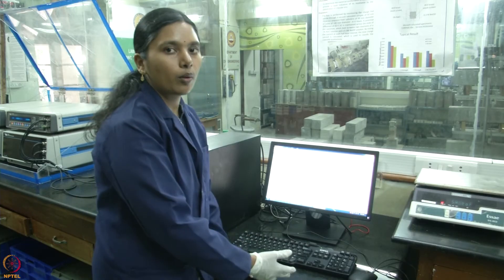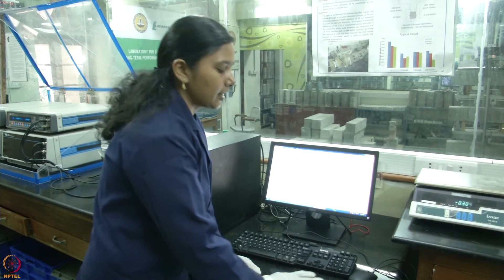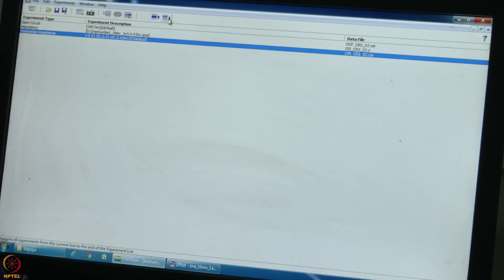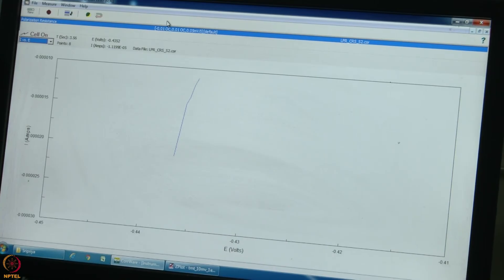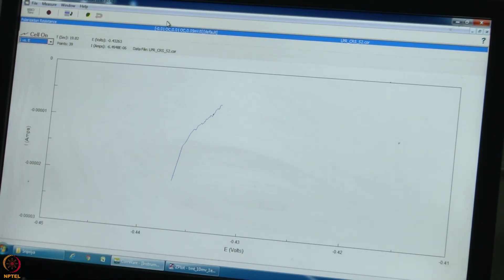Second, I will show you now the linear polarization resistance. Now, this experiment is over. We move on to the next experiment, linear polarization resistance. Now, I will start the polarization resistance experiment. From the OCP measured, there will be a DC potential that is applied plus or minus 10 millivolt and then we will get a curve that is E versus I curve. The curve is obtained. We will measure the slope of the curve near to the OCP that will give the polarization resistance of the steel.